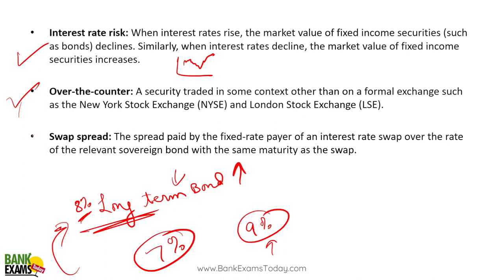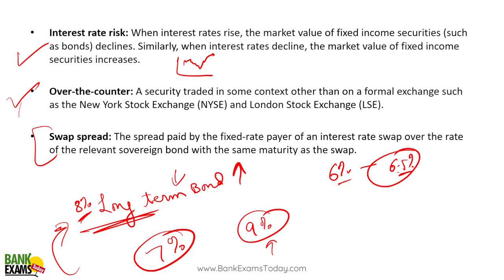What is a swap spread? If the fixed rate of interest according to T-bills is, say, 6%, but you are paying 6.5% to the bank — that extra 0.5% is the swap spread. The central counterparty — the bank — charges this amount for making the market, creating the contracts, providing clearing house services, and helping you avoid default risk. The swap spread is what the fixed rate payer of an interest rate swap pays over the sovereign bond rate of interest.